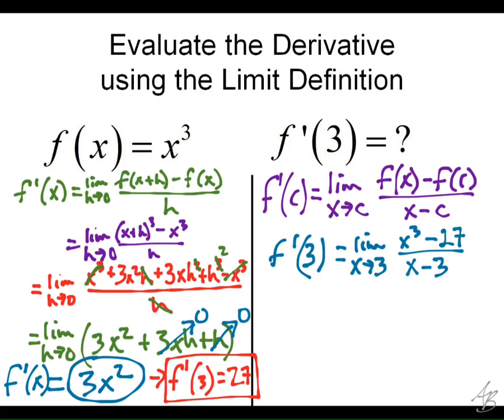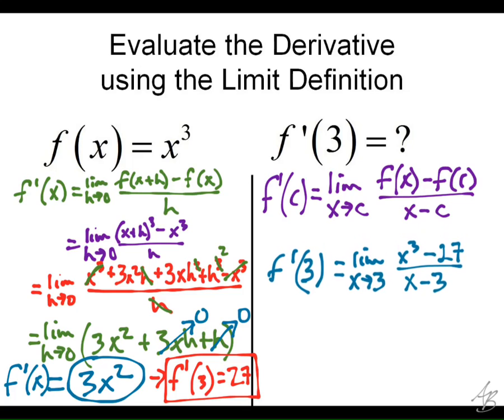Now, if we try direct substitution here, we're going to get 27 minus 27 on top, and 3 minus 3 on the bottom, so we have 0 over 0. So, what can I do here? Factor. Factor. You guys remember how to factor a difference of perfect cubes? Yes. Cool. It's a good thing to remember how to do.